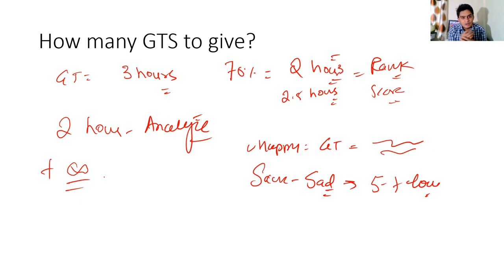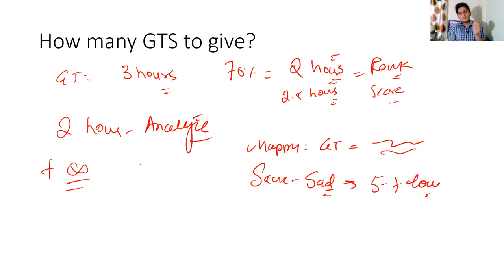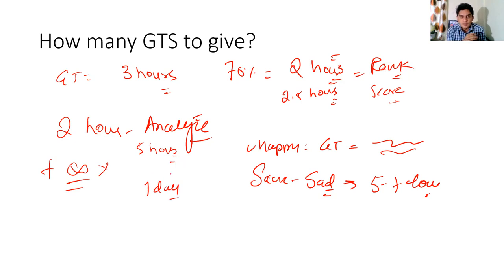If the score is low, you spend another five to seven hours feeling sad, thinking you won't get your branch. So on average you spend seven to eight hours on one GT - three hours giving, two hours analyzing, and four to five hours thinking about it. Even removing the thinking part, you spend around five hours per GT. If you give four or five GTs a month, you spend almost one full day on GTs. In those 24 hours of reading, you could cover a lot more and improve your outcome significantly.